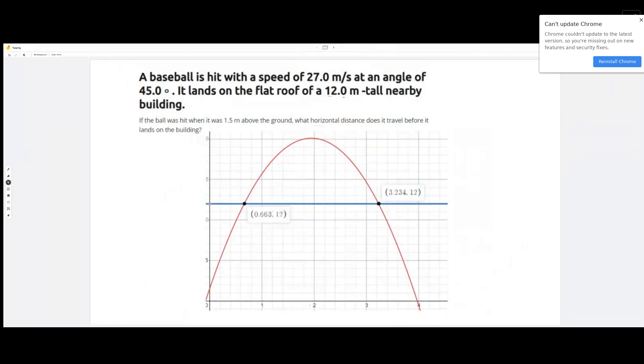As you can see, there are two time values. There are two points in time where the ball reaches a height of 12 meters. It reaches 12 meters on its way up at 0.663 seconds, and then it reaches 12 meters again on its way back down at 3.234 seconds.